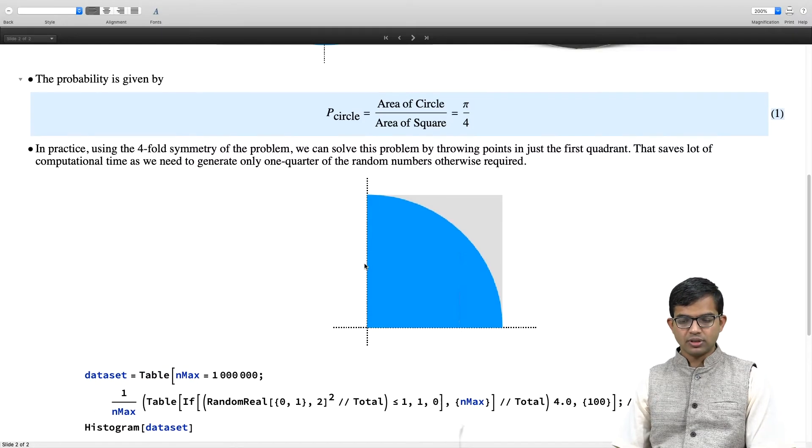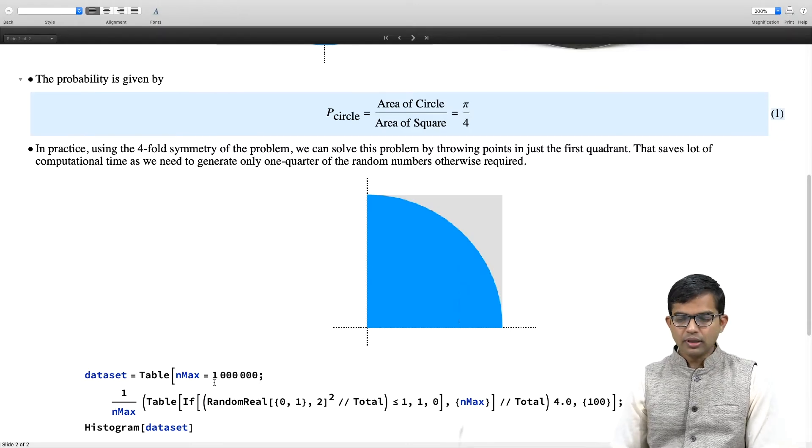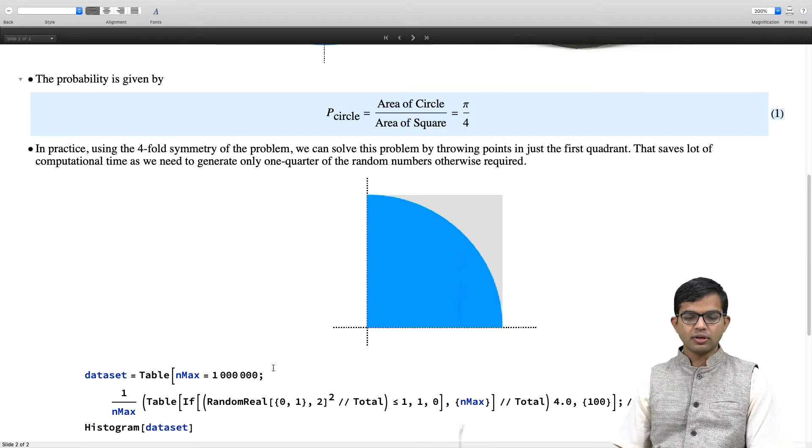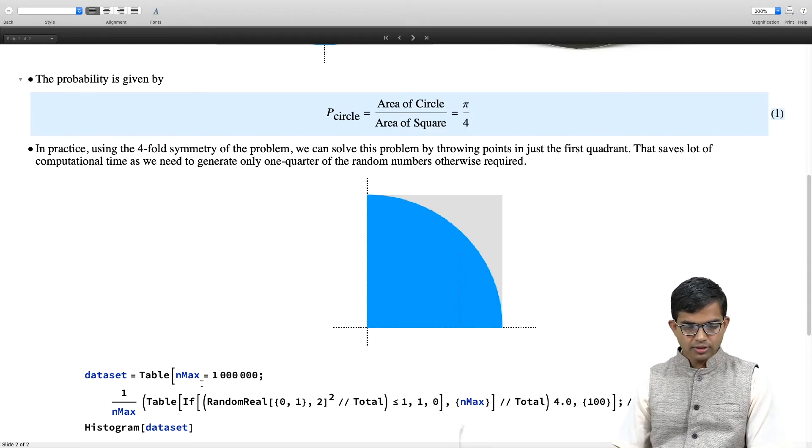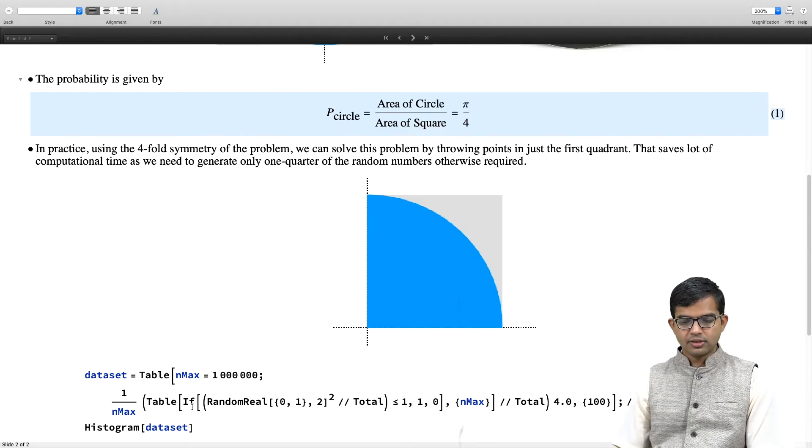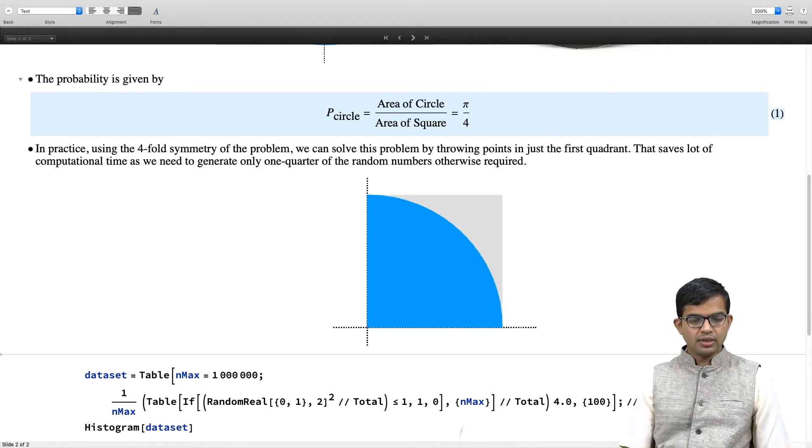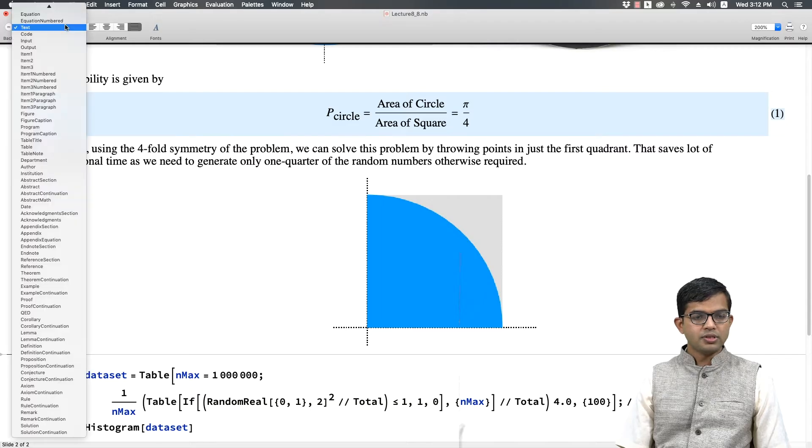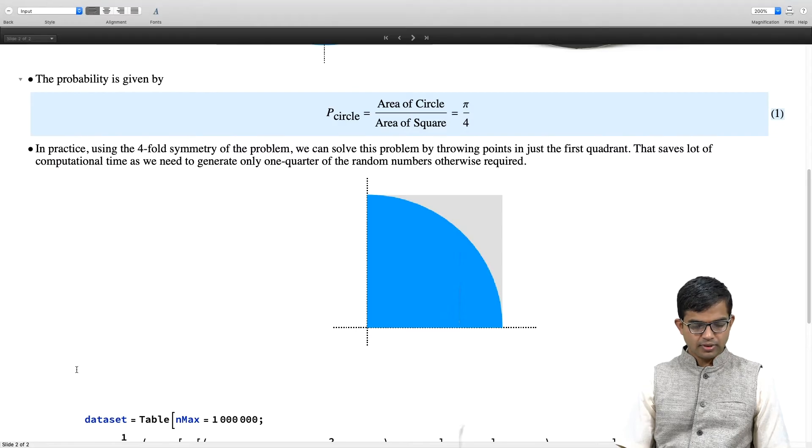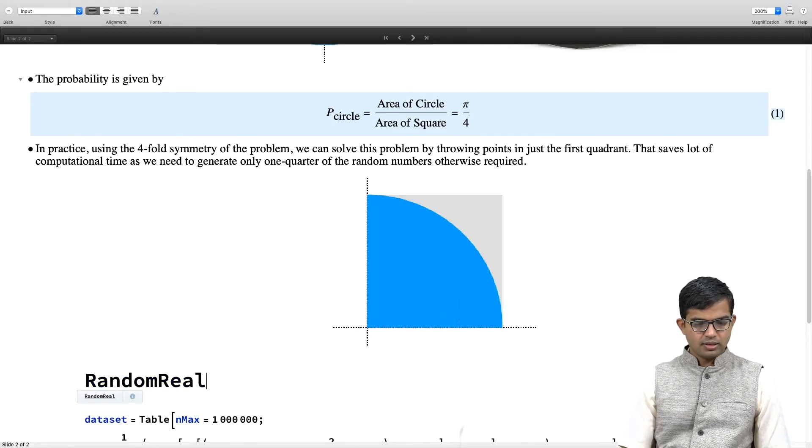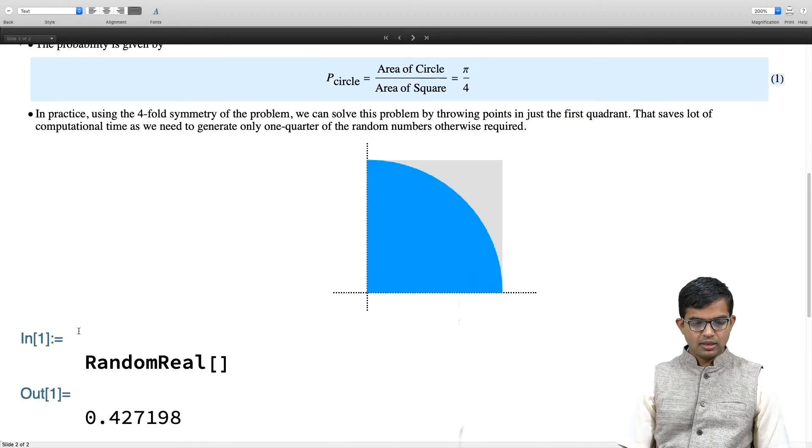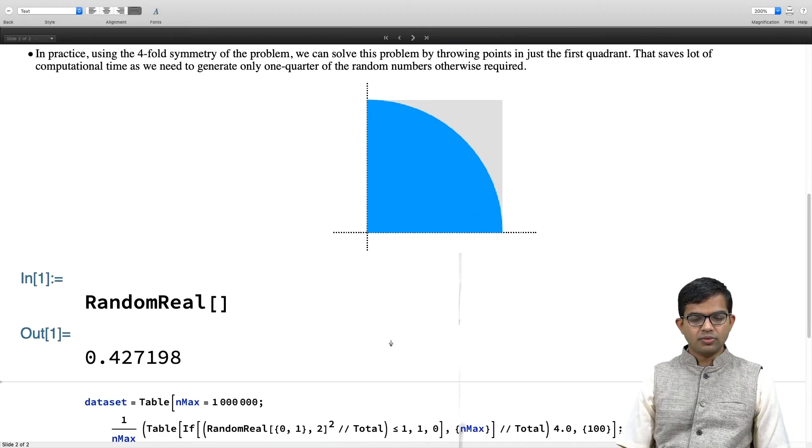Here is the code which does this. As always with Mathematica, you just try to create a table of tables. If I generate RandomReal, it will get me a random number between 0 and 1. If I do it once, it gives me a random number between 0 and 1.